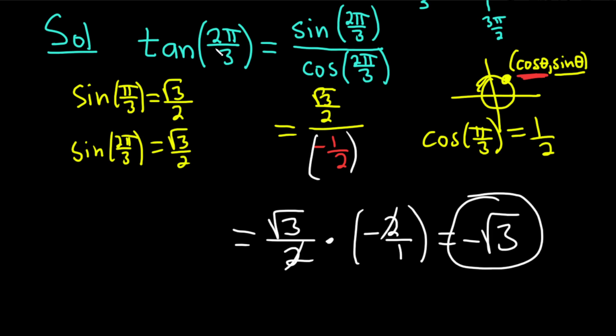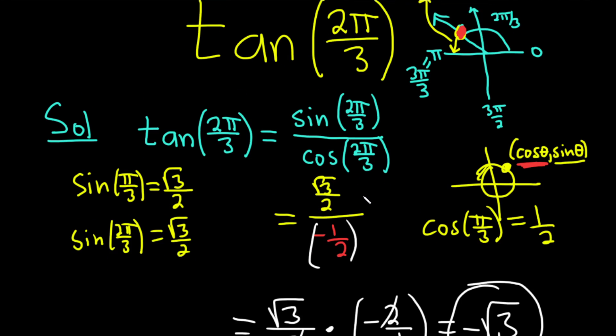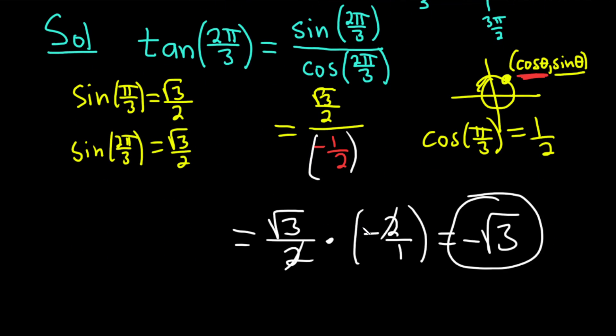So that's equal to, tangent of 2π over 3 is equal to negative square root of 3. I hope this video has been helpful to someone out there in the world who is learning this stuff. Until next time, good luck and take care.